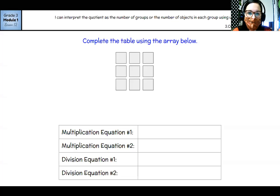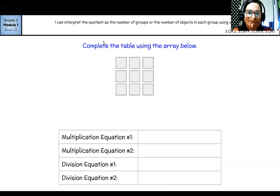So multiplication equation number one, I have three rows and I have three columns. So my first equation is three times three equals nine. And guess what? It's going to be the same for equation number two, because our two factors are the same.